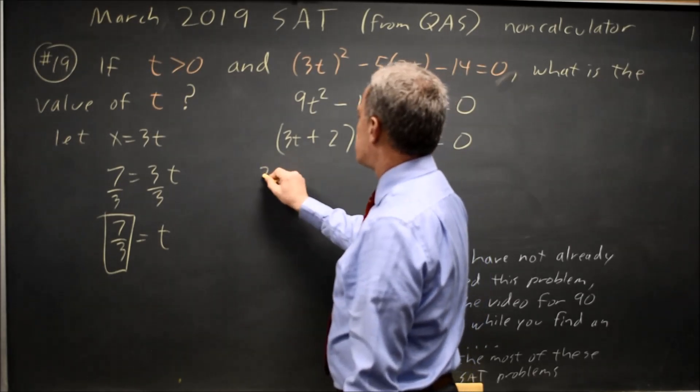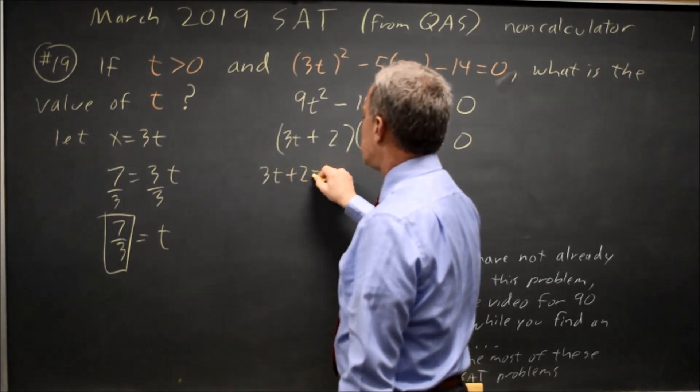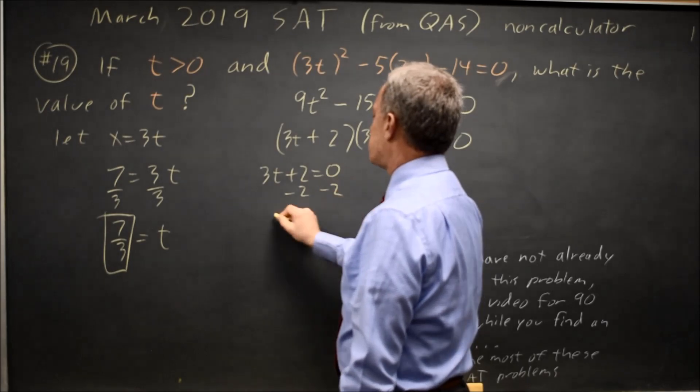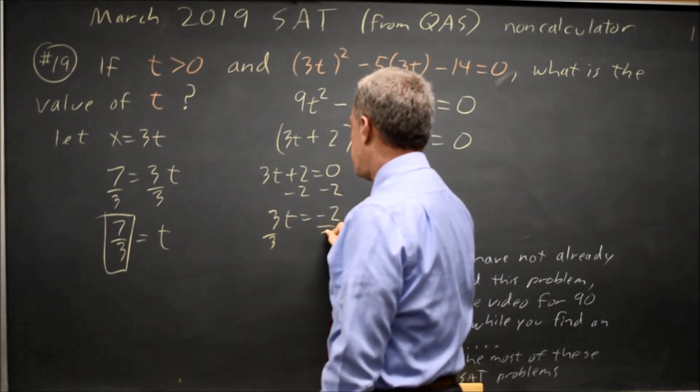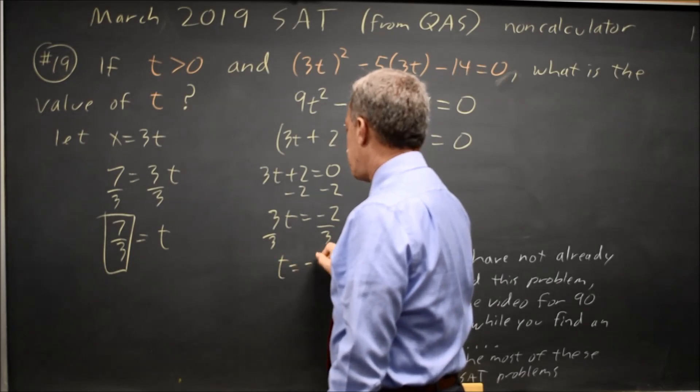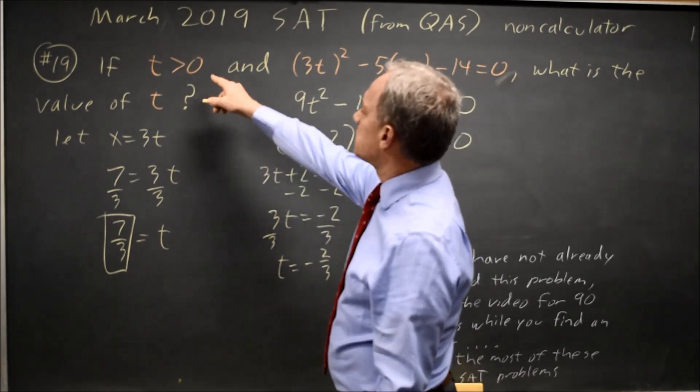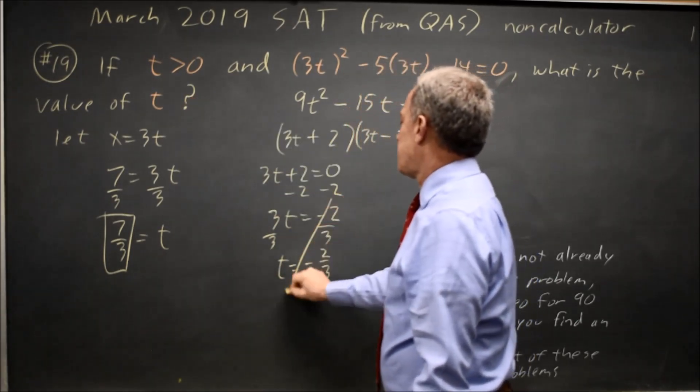Again, our product equals 0, so either 3t plus 2 equals 0. Subtract 2 from both sides, 3t equals negative 2, divide by 3, and I get t equals negative 2 thirds. But they said t is greater than 0, so that answer is no good.